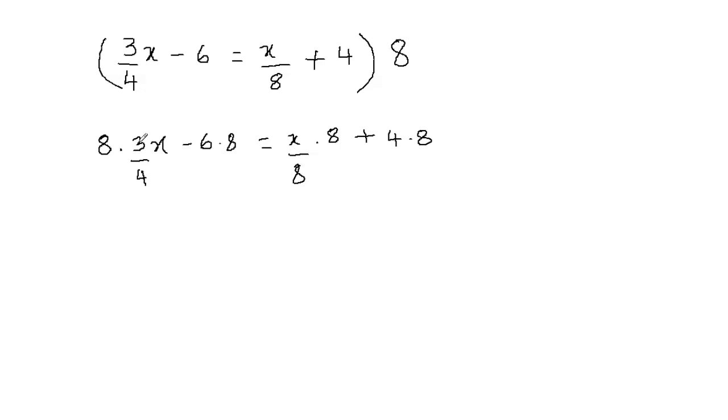8 times 3 is 24, and 24 divided by 4 is 6. Or, 8 divided by 4 is 2, and 2 times 3 is 6. So we have 6x minus 6 times 8 is 48, equals - and 8 and 8 cancel out each other - so we're left with x plus 4 times 8 is 32.